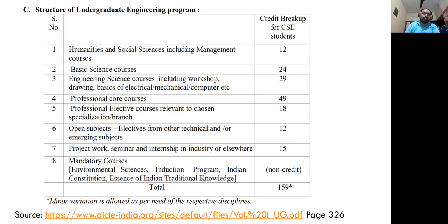This curriculum is basically for professional engineering courses. You can see here we have different types of courses: humanities and social sciences including management courses, basic science courses, engineering science courses, professional core courses, professional elective courses, open subjects, project work, and some mandatory courses. So it is not just technical subjects but also non-technical subjects, which are very essential to shape the personality of the student.